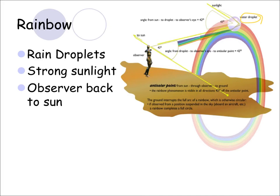What do you need to have a rainbow? You need rain droplets. You need strong sunlight. And you also have to have your back to the sun. The sun has to be behind you. Only when the sun is behind you are you looking at a rainbow. If the sun is next to a rainbow, you know that's Photoshop. It's impossible. The sun has to be behind the observer for a rainbow to occur. So they're the three conditions. Rain, strong sunlight, the sun behind you.